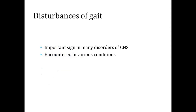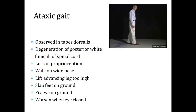Disturbances of gait are an important sign in many disorders of the CNS. Ataxic gait — gait means walking style — is observed in tabes dorsalis, which involves degeneration of posterior white funiculi of the spinal cord and loss of proprioception. The person walks on a wide base, lifts the advancing leg too high, slaps feet on the ground, fixes eyes on the ground, and worsens when eyes are closed.